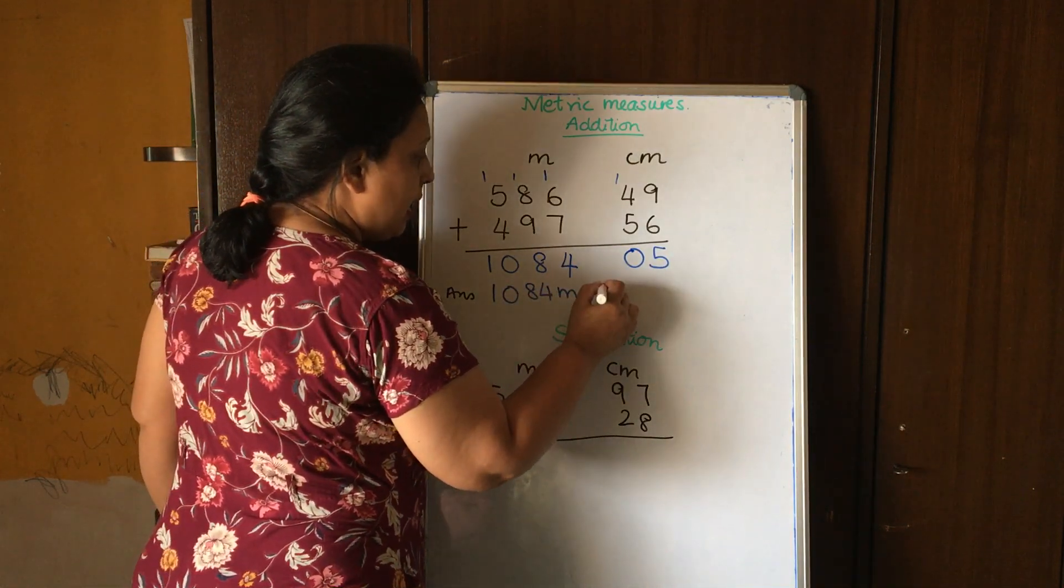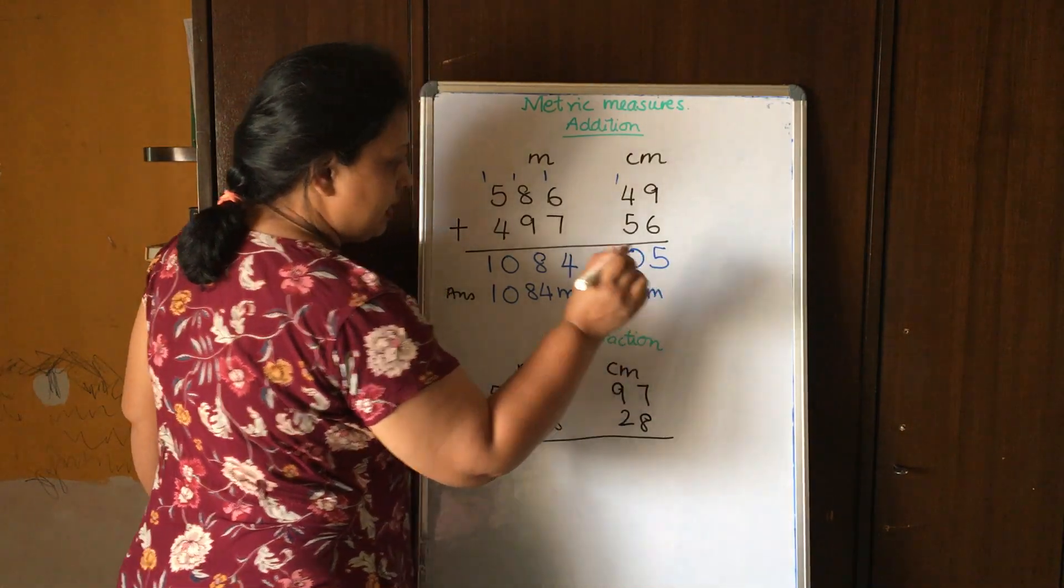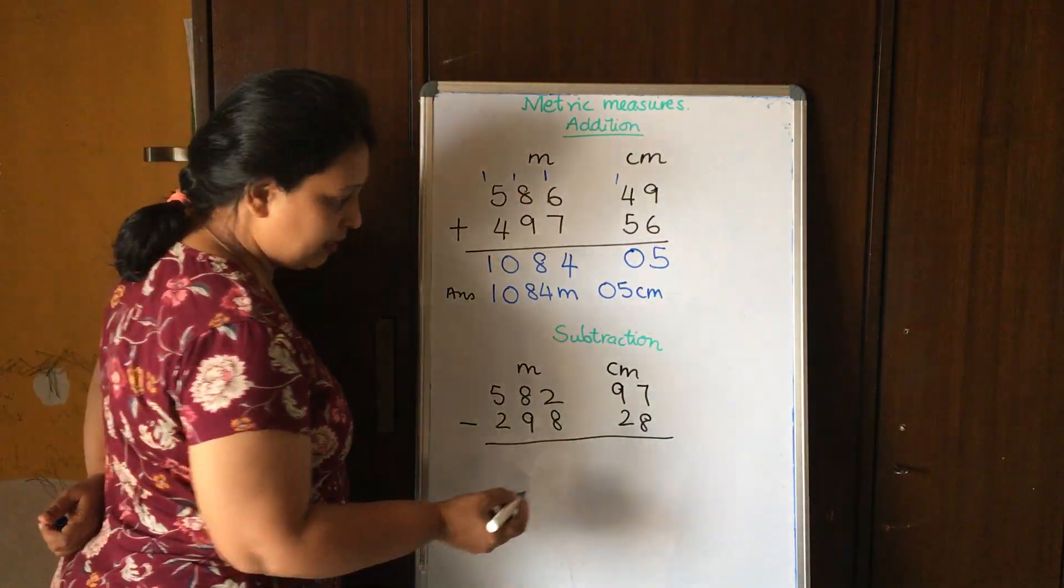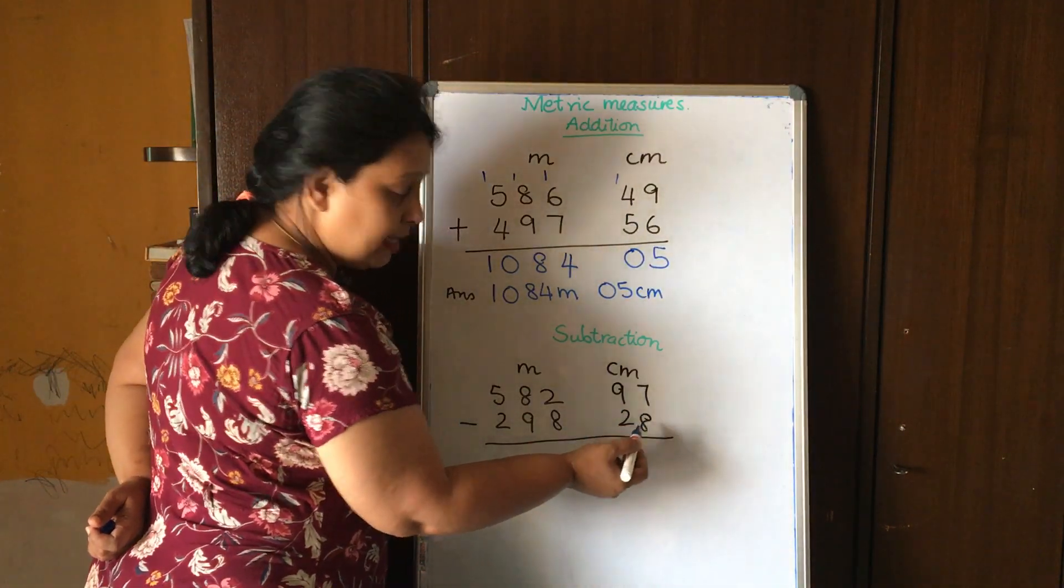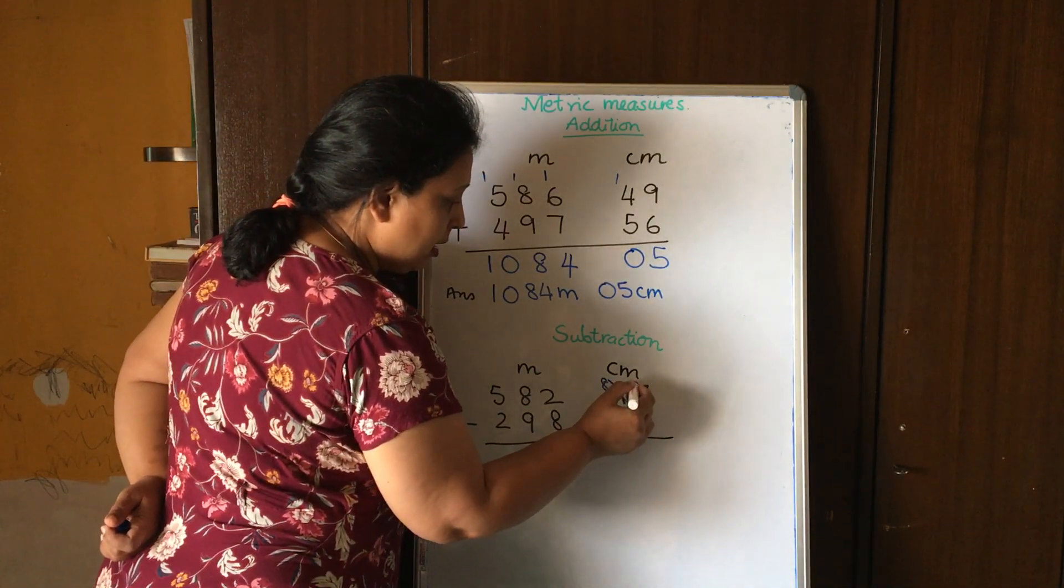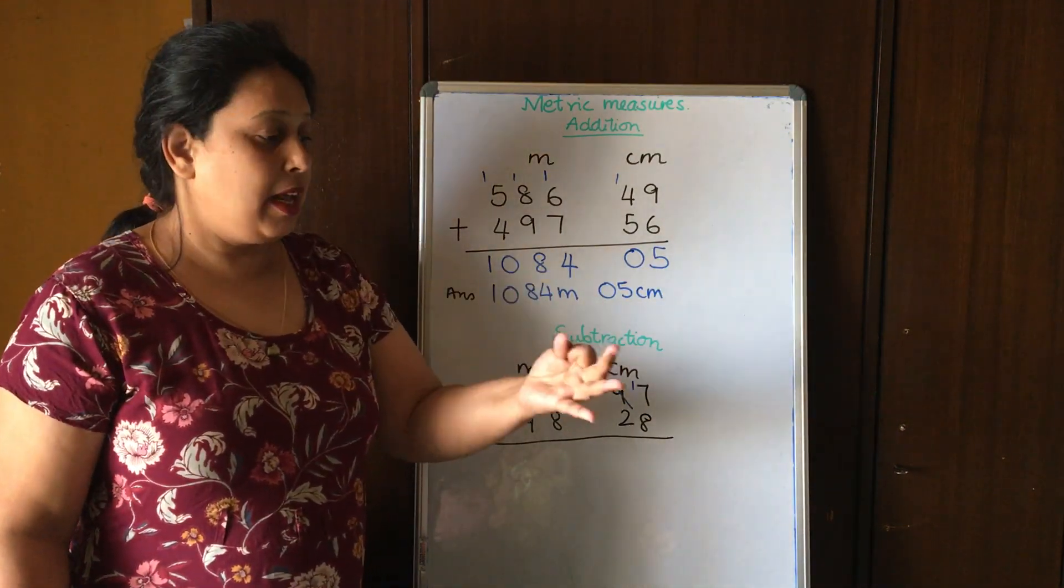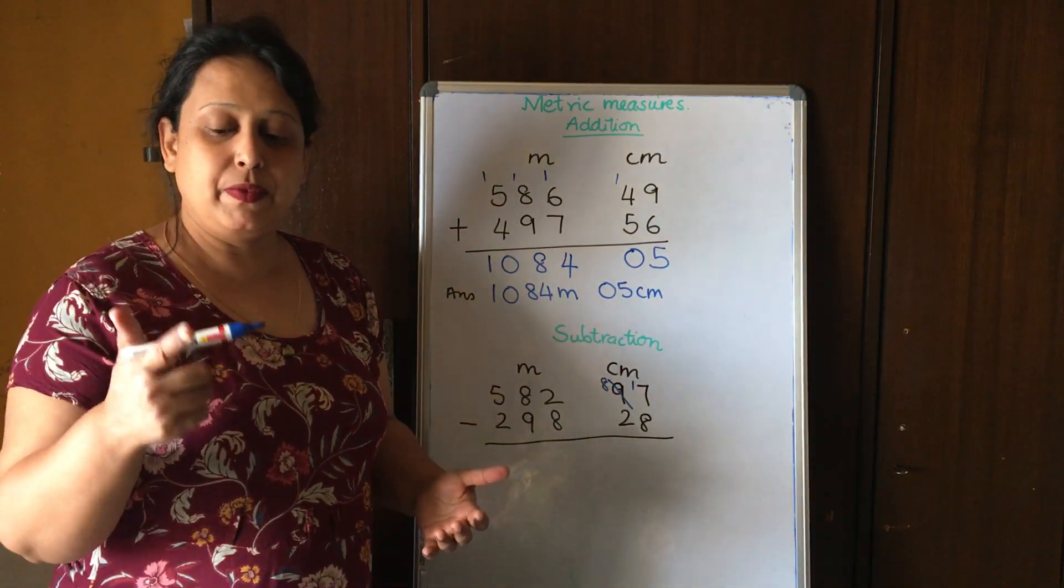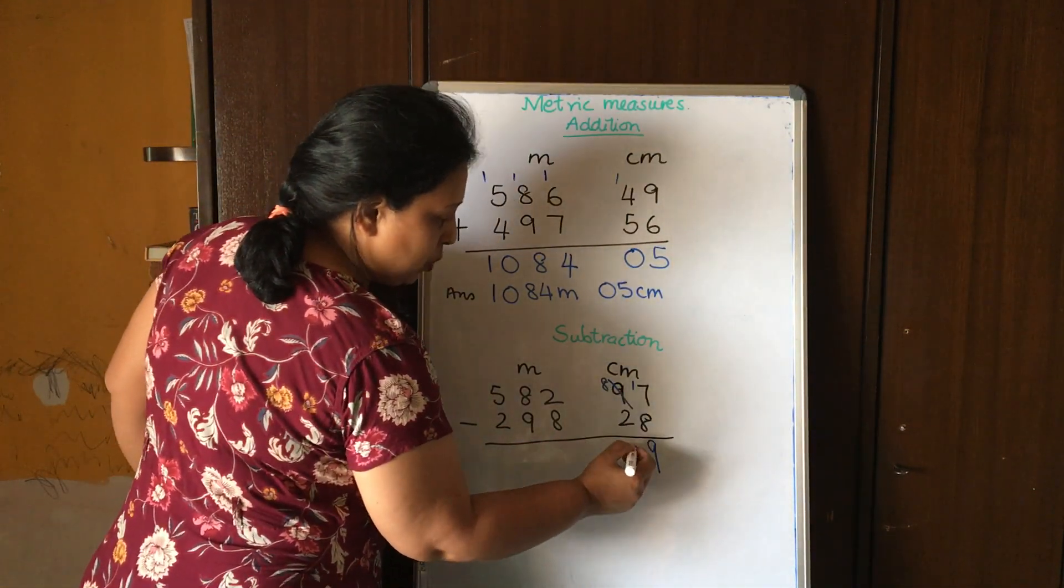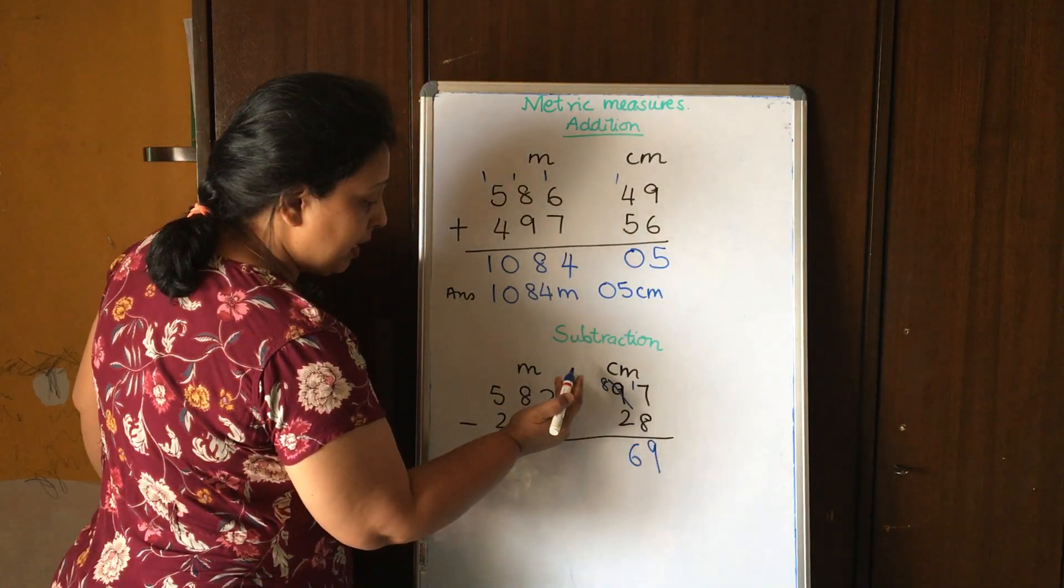Now let's do the subtraction here. Seven minus eight, not possible, so I borrow. So let's count: eight, nine, ten, eleven, twelve, thirteen, fourteen, fifteen, sixteen, seventeen - nine. Eight minus two is six. Again I leave this gap to be marked meters and centimeters.